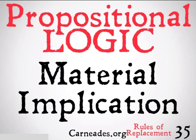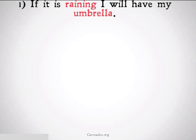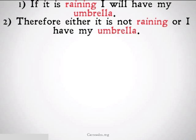To understand that better, let's take a look at some examples. If it is raining, I will have my umbrella. Therefore, either it is not raining or I have my umbrella. The implication is going to be true either if the antecedent — the first part — is false, or the conclusion is true. That's just our understanding of implication, so this should be fairly intuitive.